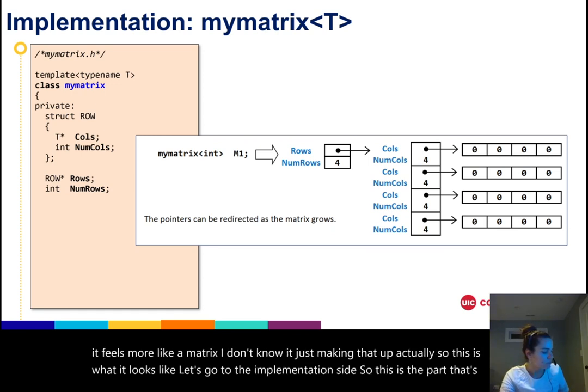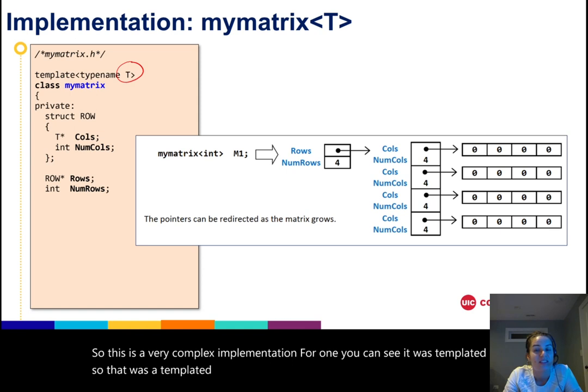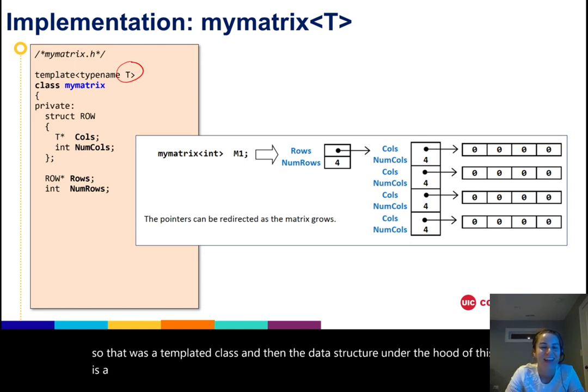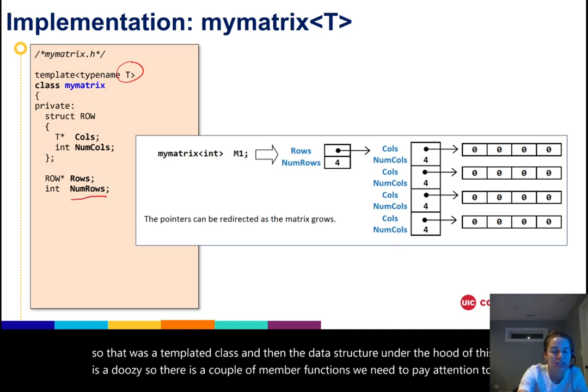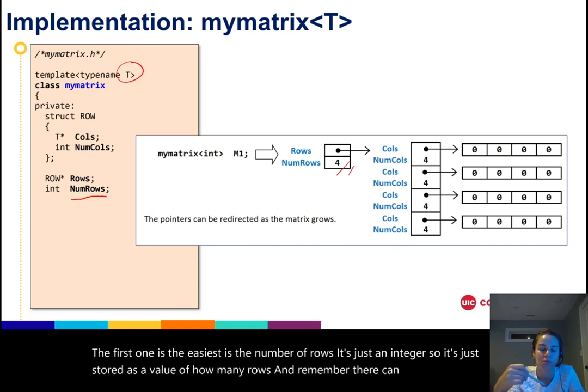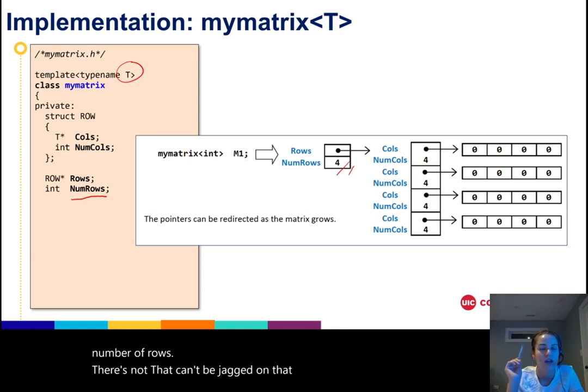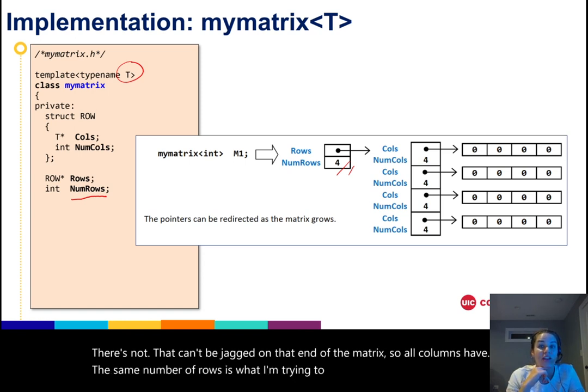Let's go to the implementation side. This is the part that's pretty tricky. This is a very complex implementation. For one, you can see it was templated, so that was a templated class, and then the data structure under the hood of this is a doozy. There are a couple of member functions we need to pay attention to. The first one is the easiest, is the number of rows. It's just an integer, so it's just stored as a value of how many rows. Remember there can only be some number of rows. All columns have the same number of rows is what I'm trying to say.